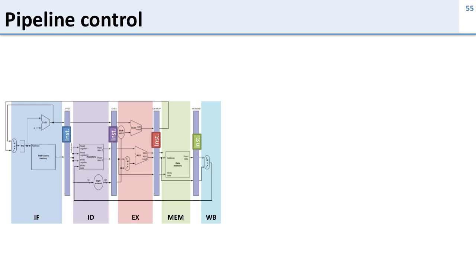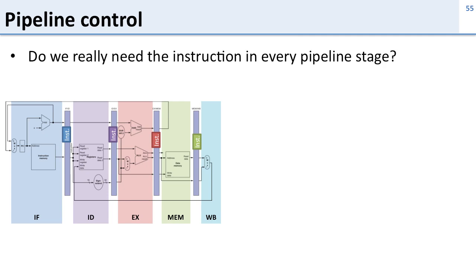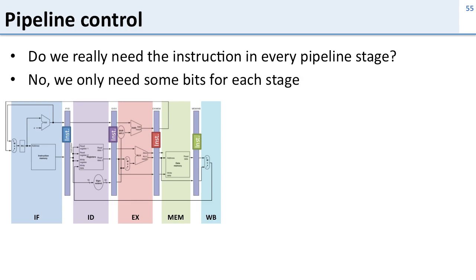Here's what I showed you before. We have our five-stage pipeline and at each stage we store the instruction so the later stages will know what to do. We should ask the question: do we really need the instruction at every pipeline stage? The answer is no — we only need some bits for each stage. Each stage needs specific information about the instruction so it knows what it's supposed to do, but doesn't necessarily need all of the instruction.